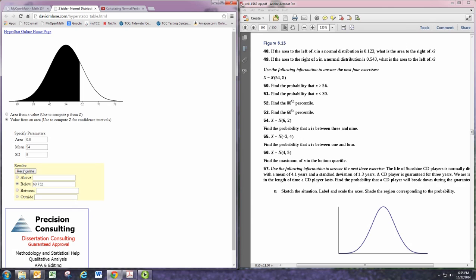So, select below, and it should calculate that. The area shaded there is 80% of the total area, and you can see that line is drawn right at 60.732.